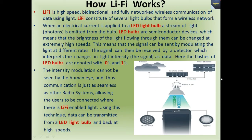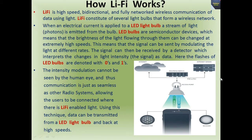Now we talk about how Li-Fi works. Li-Fi is high-speed, bi-directional, and fully networked wireless communication of data using light. Li-Fi constitutes several light bulbs that form a wireless network. When an electrical current is applied to an LED light bulb, a stream of light — meaning photons — is emitted from the bulb. LED bulbs are semiconductor devices, which means that the brightness of the light flowing through them can be changed at extremely high speeds. This means that the signal can be sent by modulating the light at different rates.